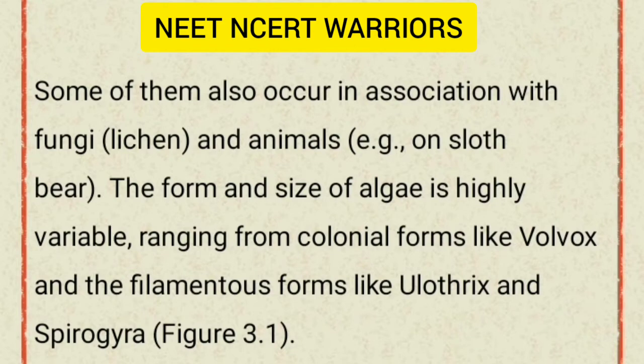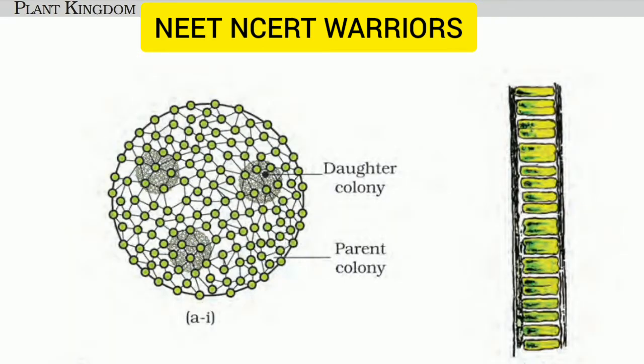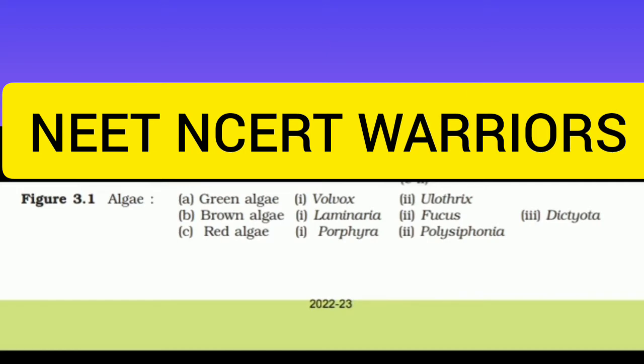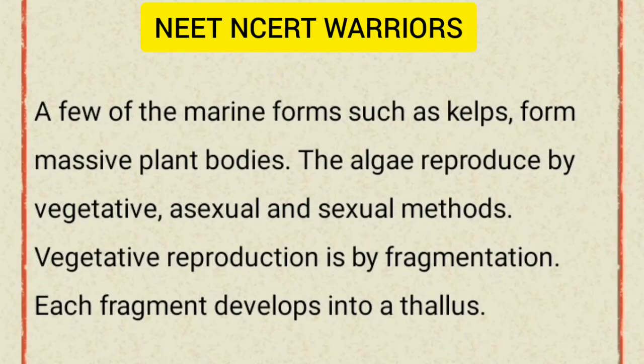For example, on sloth bears. The form and size of algae is highly variable, ranging from colonial forms like Volvox and the filamentous forms like Ulothrix and Spirogyra, as seen in Figure 3.1. A few marine forms such as kelps form massive plant bodies.